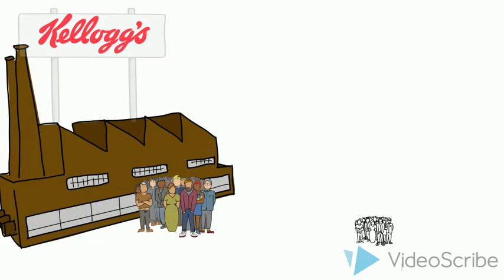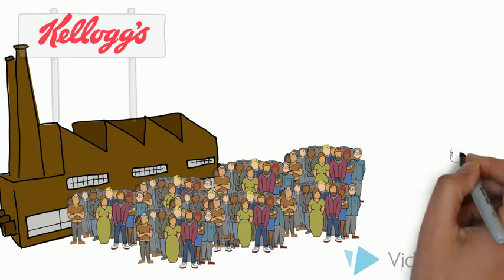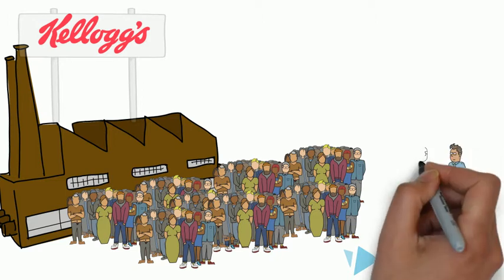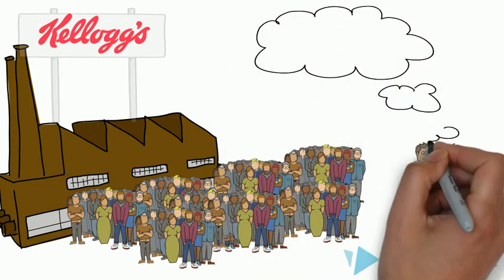W.K. Kellogg, the company founder, alongside company president Louis Brown, decided to reduce their workers' hours rather than lay anyone off. They did something quite revolutionary. They created a 30-hour workweek.